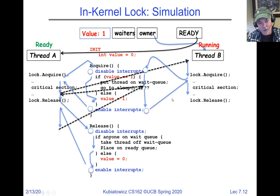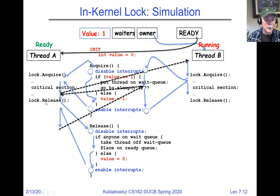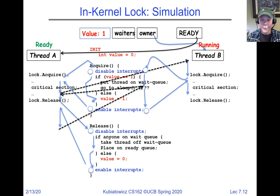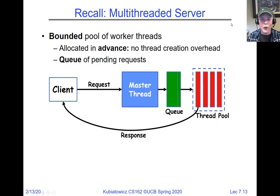This interrupt-based lock works but is very expensive. Every acquire and release requires kernel crossings. Thinking about a web server with a thread pool: the shared queue between the master thread and pool threads needs synchronization. Every enqueue and dequeue requires multiple system calls and kernel context switches. The time in and out of the kernel fundamentally limits performance. This works mostly on a single processor/core — it doesn't generalize well to multi-core.